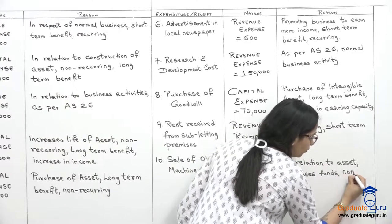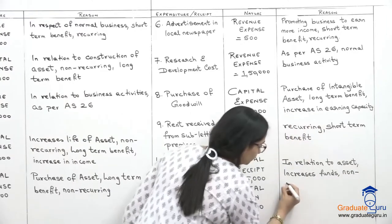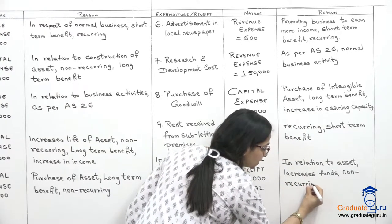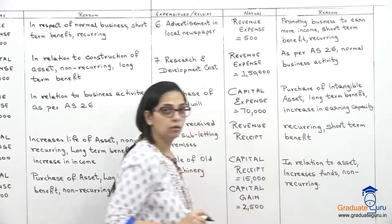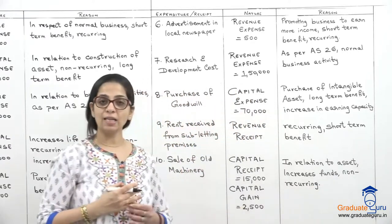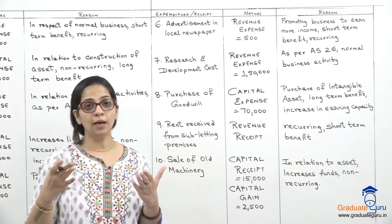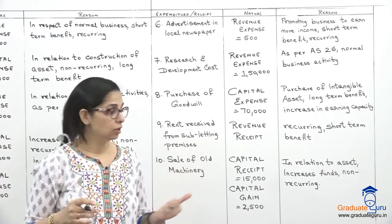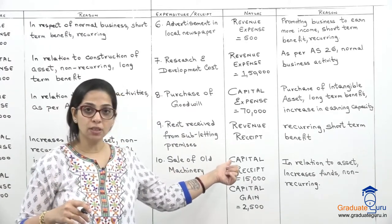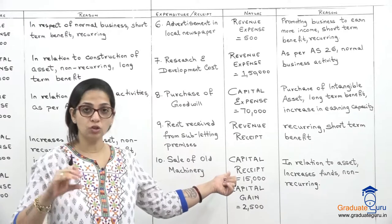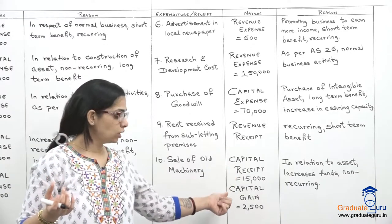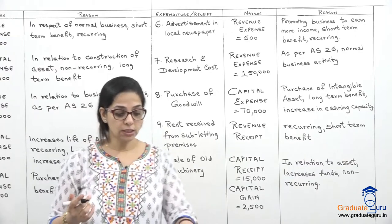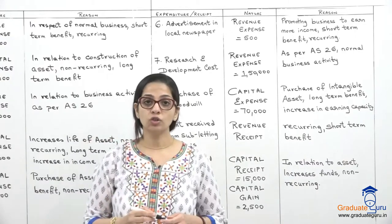It is non-recurring — it is not my business to sell machines; a machine is an asset we sell only occasionally. So that is why I have treated it as capital receipt, and the profit on it is also capital in nature. This ends question number 3.